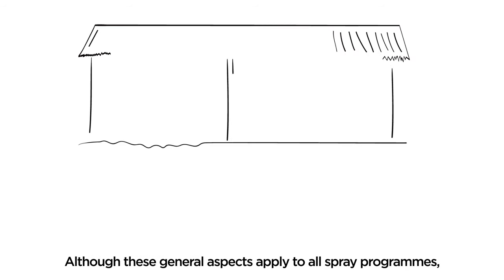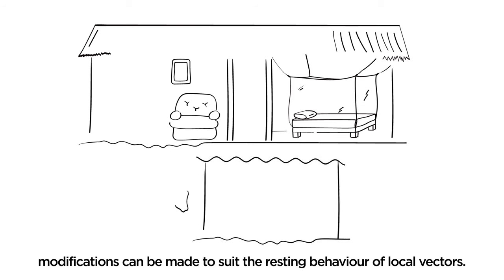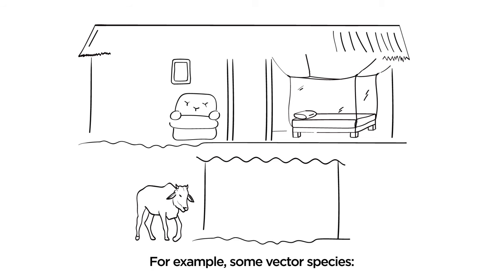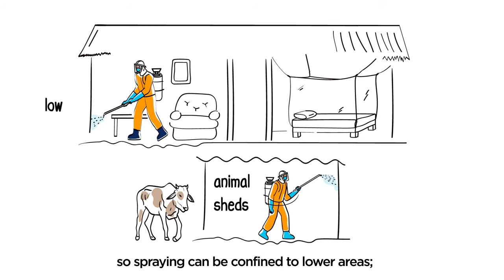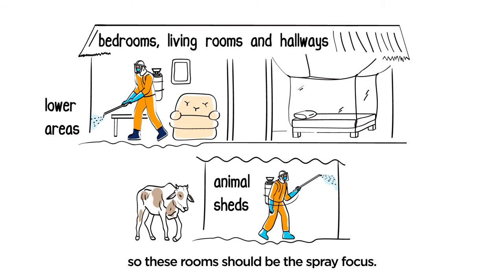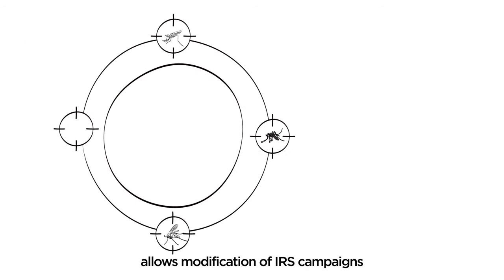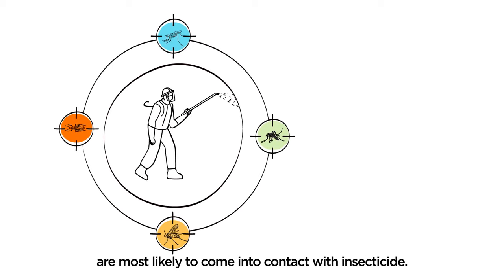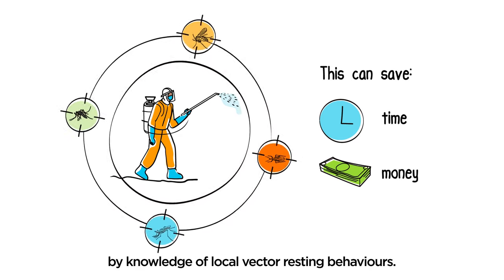Although these general aspects apply to all spray programs, modifications can be made to suit the resting behaviour of local vectors. For example, some vector species may feed on and rest near animals, so animal sheds should also be sprayed. Some may commonly rest closer to the ground, so spraying can be confined to lower areas. Others may rest mainly in bedrooms, living rooms, and hallways, so these rooms should be the spray focus. Knowing the local vectors and their behaviours allows modification of IRS campaigns to target the places where vectors are most likely to come into contact with insecticide, which can save time and money. Any modifications must be guided by knowledge of local vector resting behaviours.